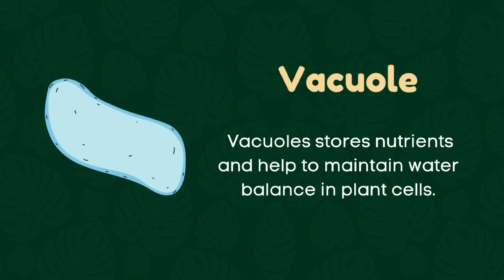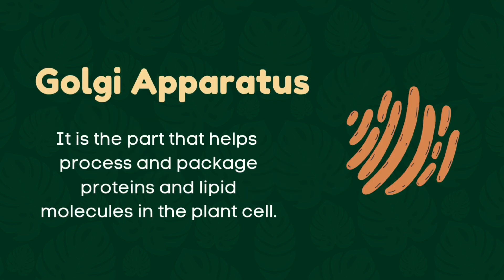Vacuole: It stores nutrients and helps to maintain water balance in the plant cells. Golgi apparatus: It is a part that helps process and package proteins and lipid molecules in the plant cell.